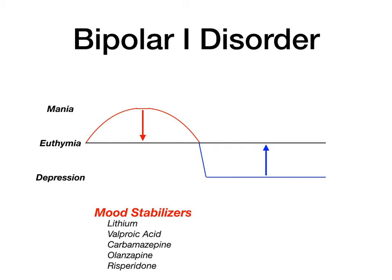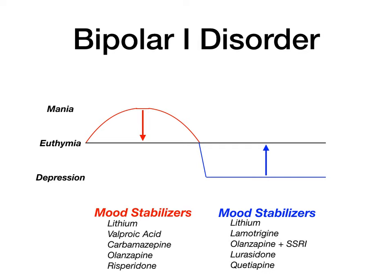To fix the depressed phase of bipolar 1, you also use mood stabilizers: lithium, lamotrigine, olanzapine plus an SSRI, lurasidone, and quetiapine. Different drugs from different categories are used because all of them — whether antipsychotics or anti-epileptics — have mood-stabilizing properties that fix the manic episode or the fluctuation between mania and depression.